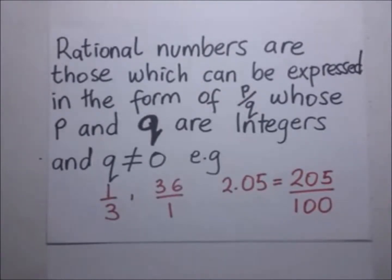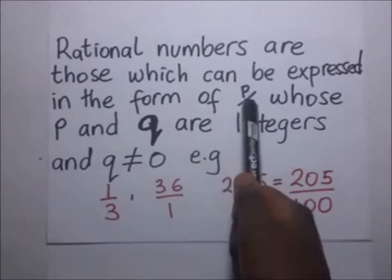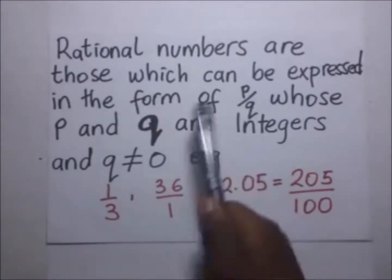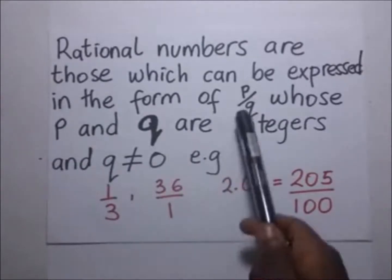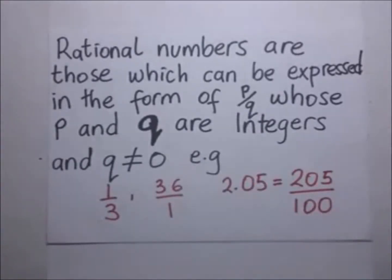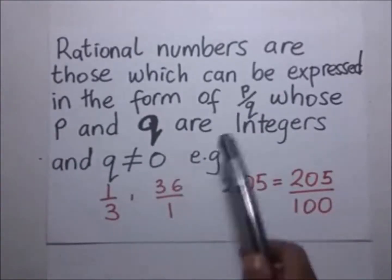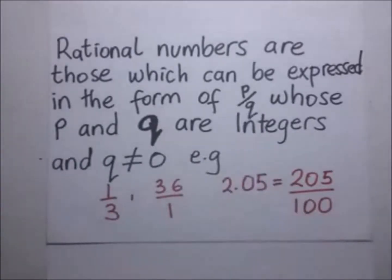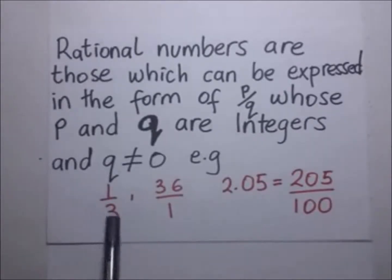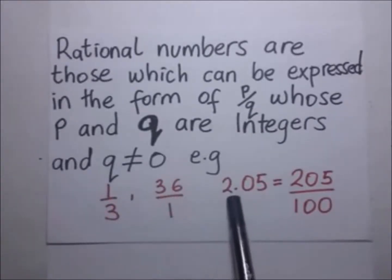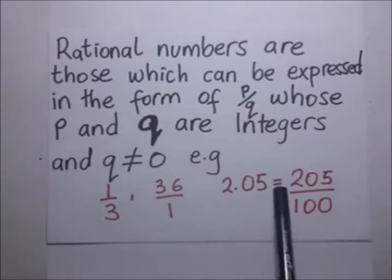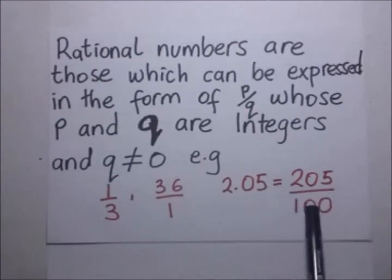Rational numbers are those which can be expressed in the form of P over Q, where P and Q are integers, as long as none of them is zero. Examples include 1 over 3, 36 over 1, and 2.05 which equals 205 over 100.